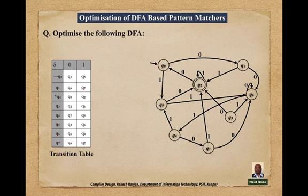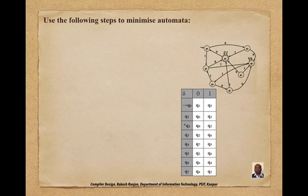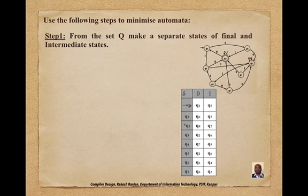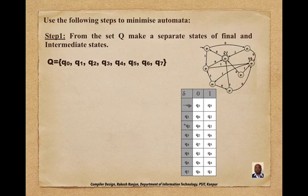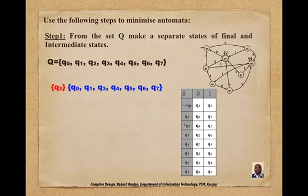Let us start how we can optimize it using the following steps to minimize this automata. Step 1: from the set Q — which is the set of all states {q0, q1, q2, q3, q4, q5, q6, q7} — we separate the final states into one set and the intermediate (non-final) states into another. Here the final state is q2, and the non-final states are {q0, q1, q3, q4, q5, q6, q7}.